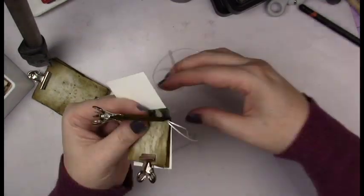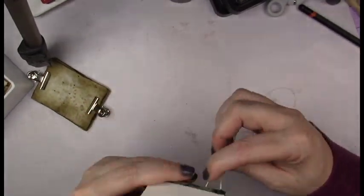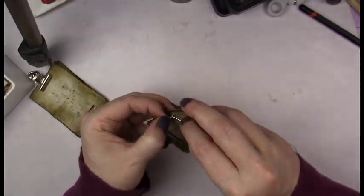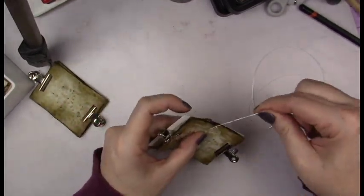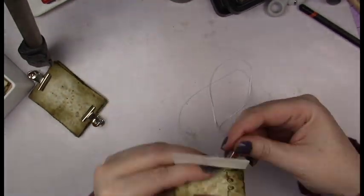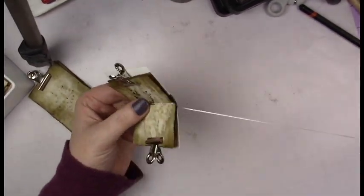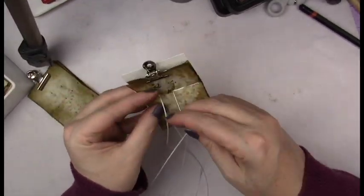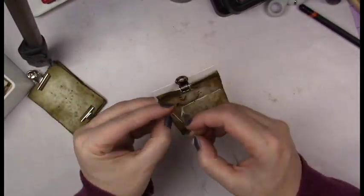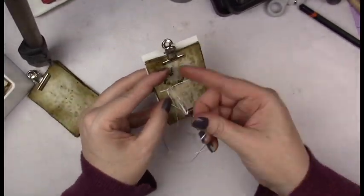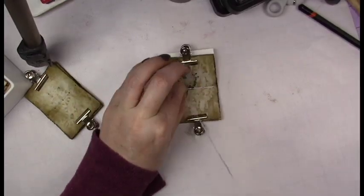Then I just sewed in the first signature and tied it off on the end. Make sure you use some clips to hold the pages together when you're sewing—it's a lot more difficult if they're not bound like that.